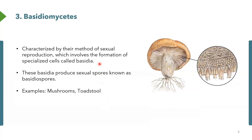The next one is basidiomycetes. It is characterized by sexual reproduction where hyphae are formed, and in this kind of sexual reproduction, they have specialized cells called basidia. These basidia are club-like structures that contain spores called basidiospores. That is why we have the name basidiomycetes. A classical example of fungi in this class is the mushrooms and toadstools, and they normally have a cap-like structure called a basidiocarp.